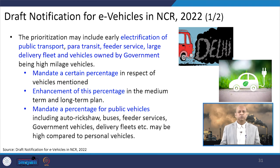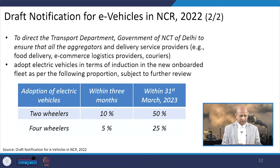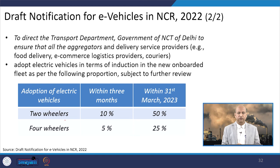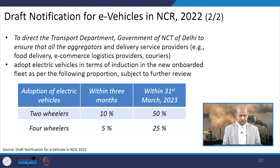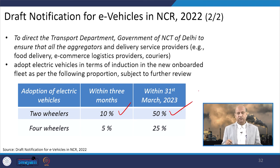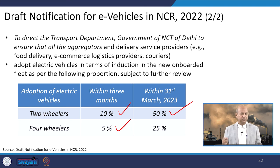The long-term plan is to have more and more e-vehicles. The transport department of NCR has been directed to adopt electric vehicles for two-wheelers and four-wheelers: within three months, 10% of two-wheelers must convert to e-vehicles, and by 31st March 2023, this must increase to 50%. For four-wheelers, 5% must convert within three months and 25% within one year.